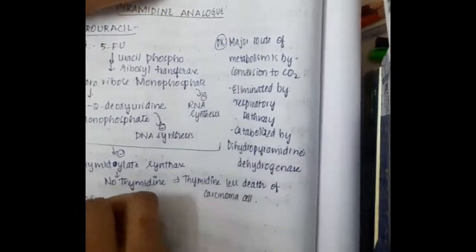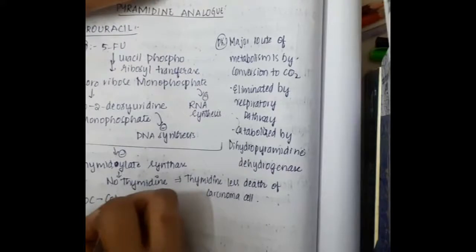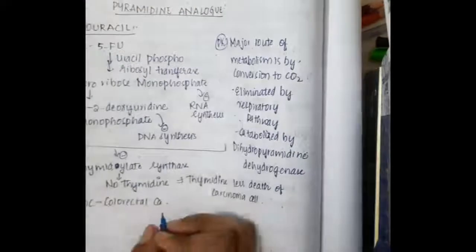Because thymidine is an important component of DNA synthesis, if there is no thymidylate and no DNA or RNA synthesis, the cell dies. The drug of choice for 5-fluorouracil is colorectal carcinoma.